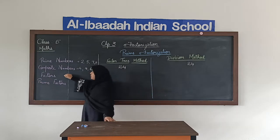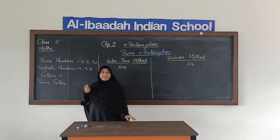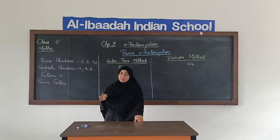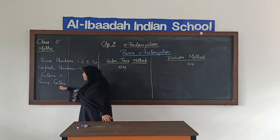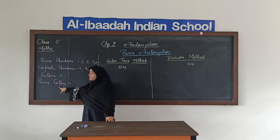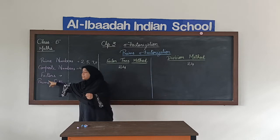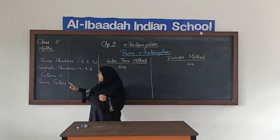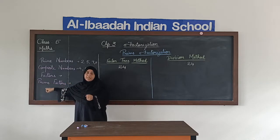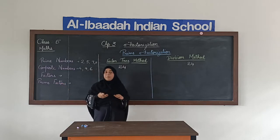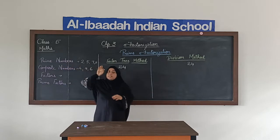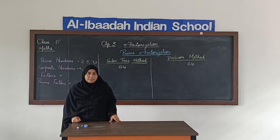Next we have factors. Factors are the numbers that divide a number — the numbers that divide a particular number completely. We call them factors of that number. Then we have prime factors. Prime factors means if the factors are prime numbers, then we call them prime factors — numbers that divide a particular number but those numbers will specifically be prime numbers. Such factors are called prime factors.